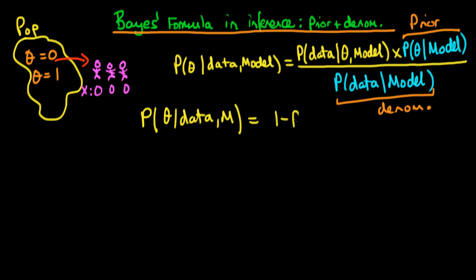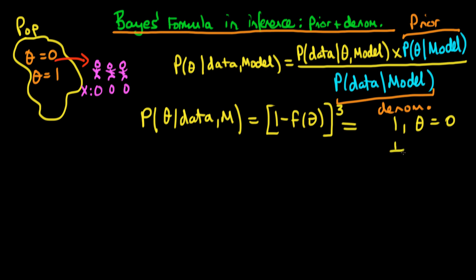We found that the likelihood was equal to one minus f of theta, where f of theta represents the probability of an individual from a particular tribe — and hence a particular theta — being infected. It was one minus f of theta to the power of three, which equals one when theta is zero, because if they come from an uninfected tribe it is certain all individuals would be uninfected, and it was equal to one-eighth in the circumstance where they come from a tribe which is in fact infected.